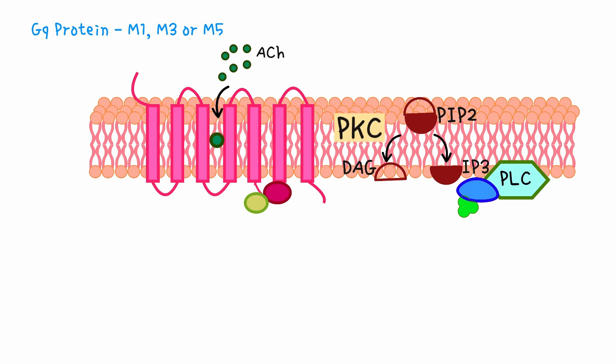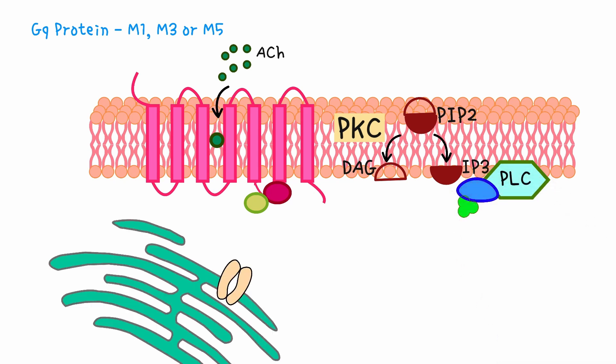DAG remains in the cell membrane and activates PKC by making it sensitive to calcium. IP3 diffuses into the cytosol and binds to receptors on the endoplasmic reticulum, opening calcium channels.